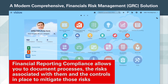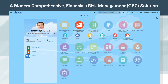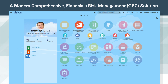Financial Reporting Compliance allows you to document processes, the risks associated with them, and the controls in place to mitigate those risks. Documentation and assessment workflow information is available to aid in the review of management conclusions on access and financial control incidents identified, document mitigating or compensating control activities, and manage the overall controls universe and compliance requirements — for example, GDPR, PCI, SOX, COSO, and OMB Unified Guidance.